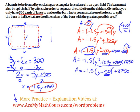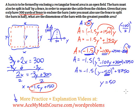In other words, we have found the vertex of the area function. The vertex is at y equals 50, with a maximum area of 3,750. So the value of y that maximizes the area is 50 yards, and the maximum area is 3,750 square yards. To find x, I plug in 50 for y: negative 1.5 times 50 is negative 75, plus 150 is just 75. So x equals 75 yards.